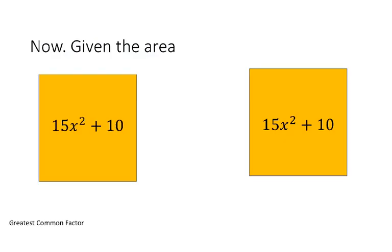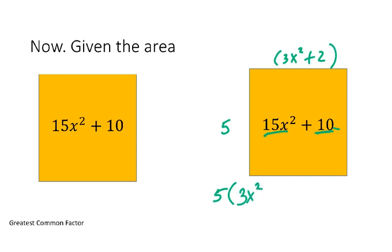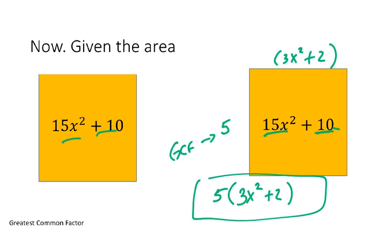Now, given 15x² + 10, we look for the GCF. The largest number that's a factor of both 15 and 10 is 5. Then looking at x² and the constant term — there's no x in the second term, so we can't pull an x out. Our GCF is 5. We then figure out what multiplied by 5 gives each term: that's 3x² + 2. So 5 times 3x² gives us 15x², and 5 times 2 gives us 10, making the factored form 5(3x² + 2).